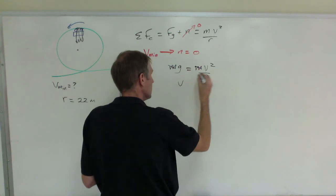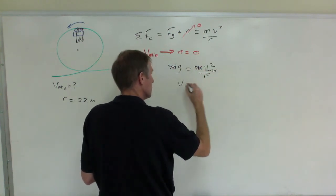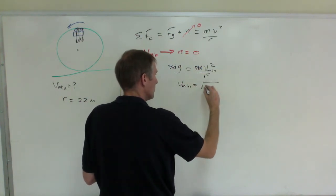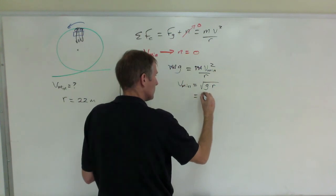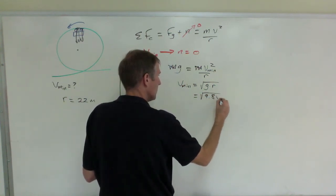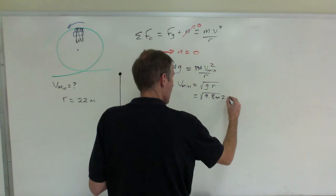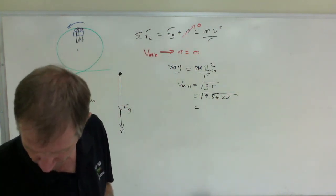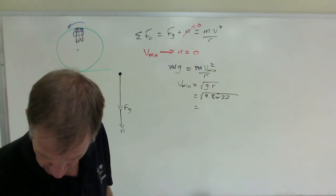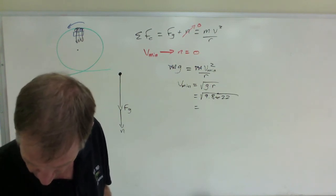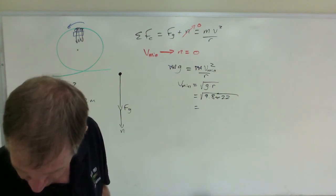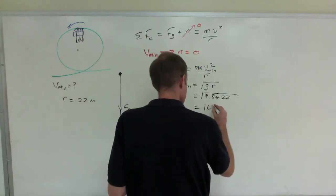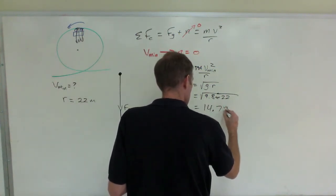Solve for v. This is v min, minimum speed, equals the square root of g times r, which is the square root of 9.8 times 22, which comes out to be, see I forgot to calculate this, square root of 9.8 times 22, is 14.7 meters per second.